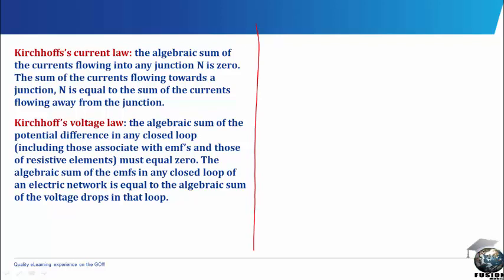So, Kirchhoff's current law says that the algebraic sum of the current flowing into any junction N is zero. The sum of the current flowing towards a junction N is equal to the sum of the current flowing away from the junction.